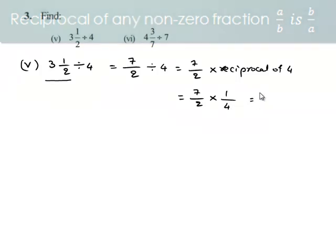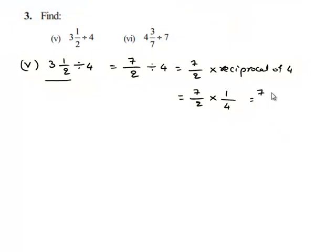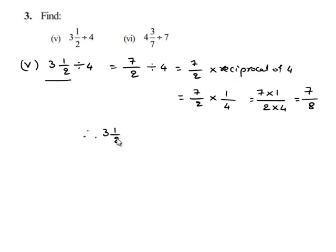This is equal to 7 multiplied by 1 upon 2 multiplied by 4, which is equal to 7 upon 8. Therefore, 3 and 1/2 divided by 4 is equal to 7 upon 8.